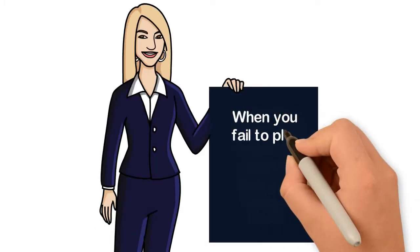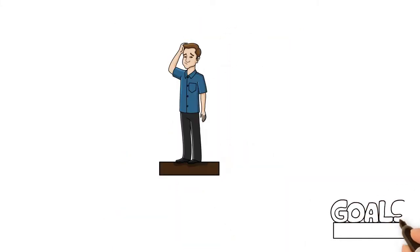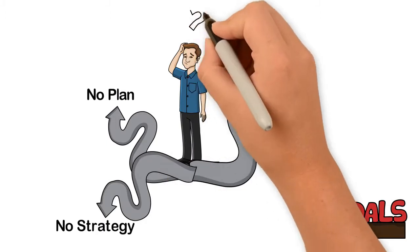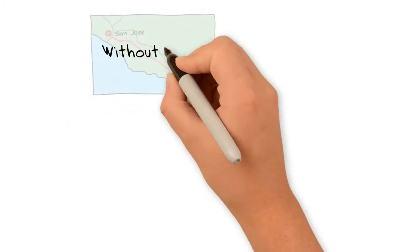Like the cliche, when you fail to plan, you are definitely planning to fail. Most times, we set goals with no direction, plan, or strategy to get there. It's like driving from San Jose to San Diego without a map.